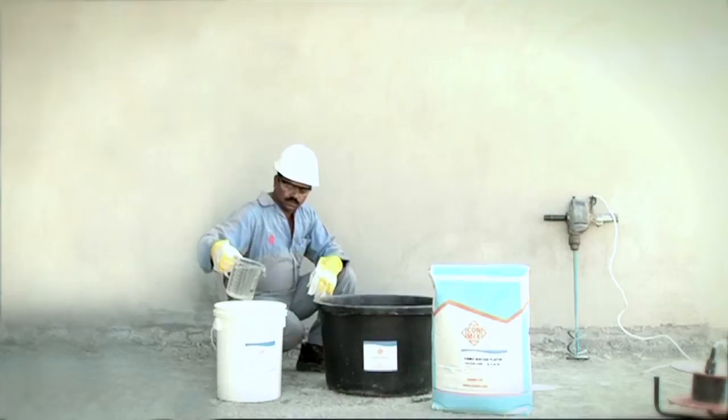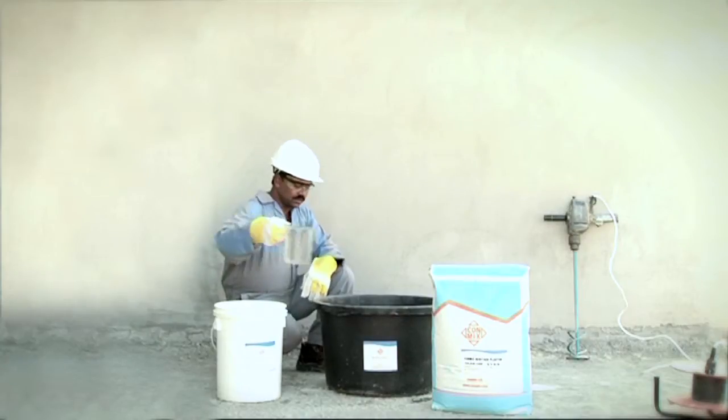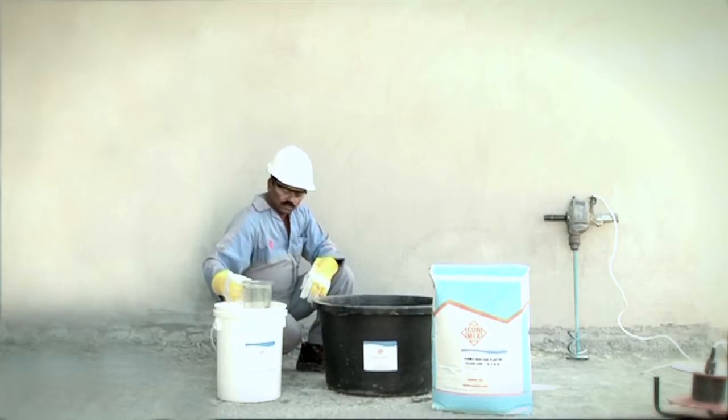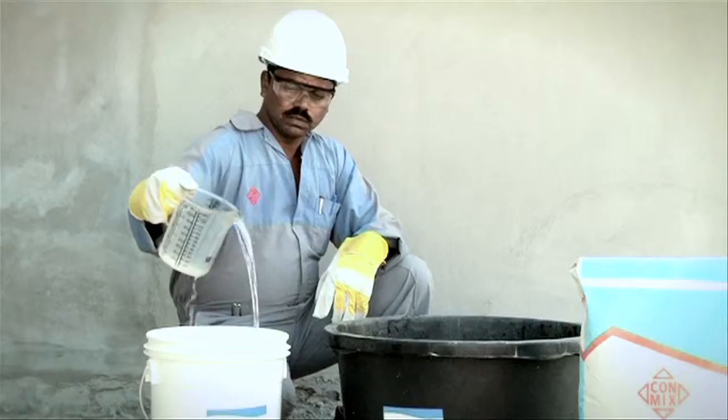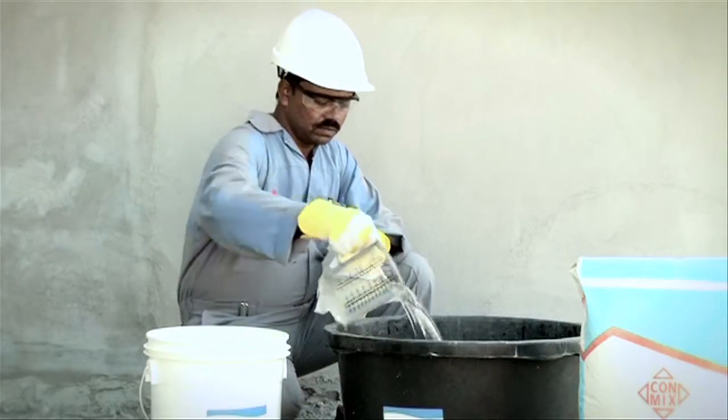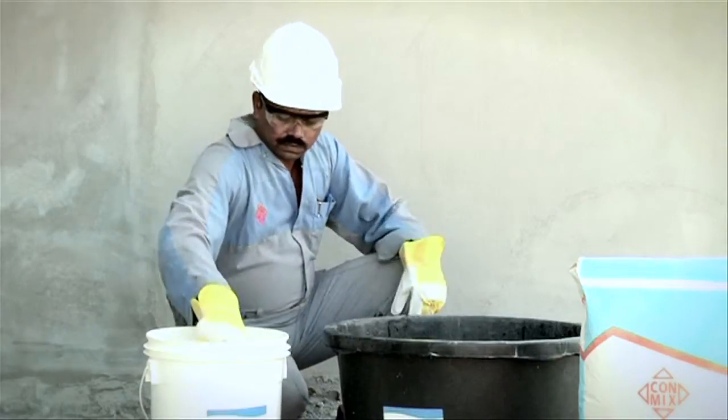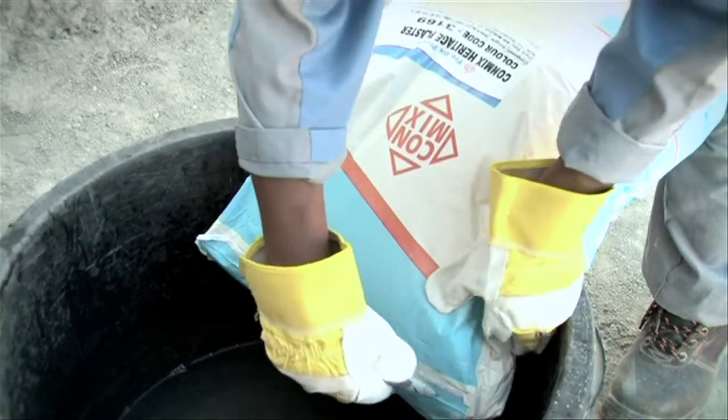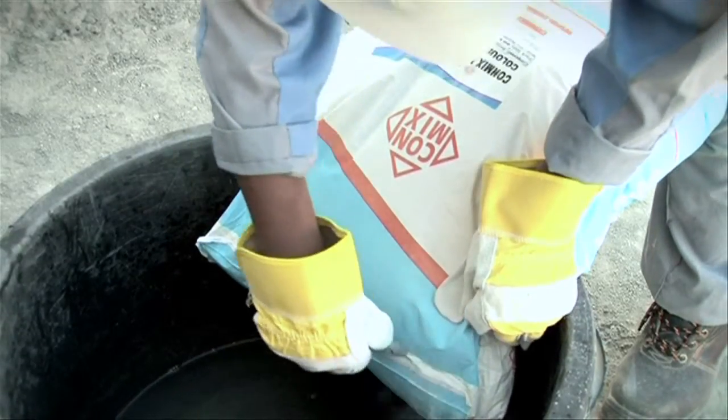Mix CHP with potable water in a clean plastic bucket or a clean non-corrosive uncontaminated metal tub. Add 10 liters of water for each 50 kilogram bag of CHP. Turn the contents of the bag into water and stir.